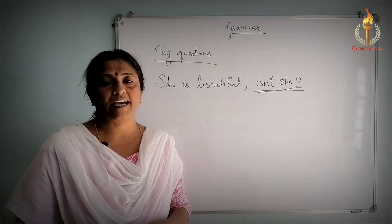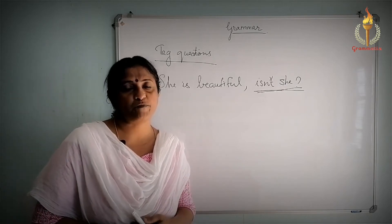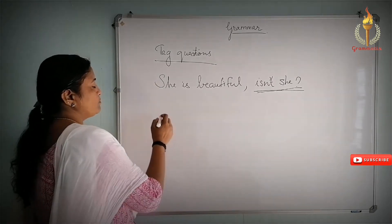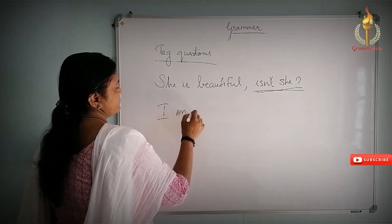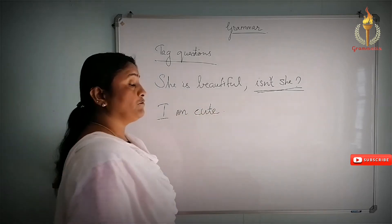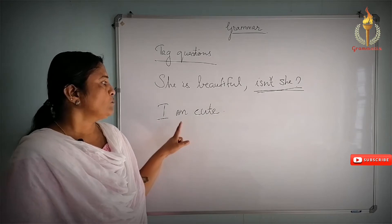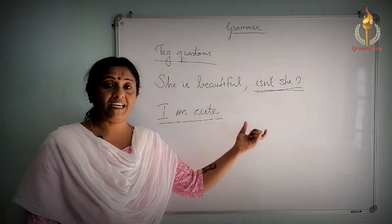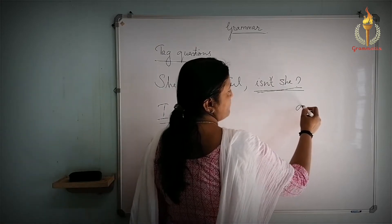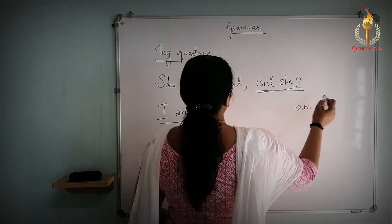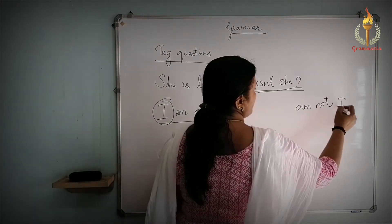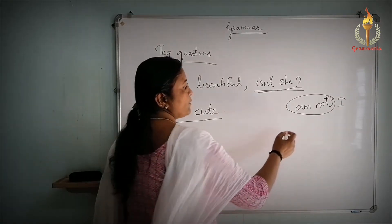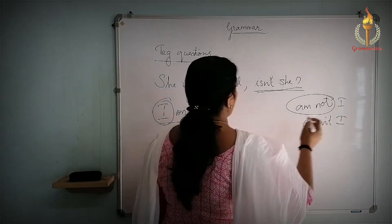When writing a tag, you need the helping verb and the subject pronoun. If it is an affirmative sentence, you have to add 'not.' For example, 'I am cute' — the helping verb is 'am,' and since it is affirmative, the tag is negative. 'Am not' does not have a contracted form, so instead we use 'aren't I.'